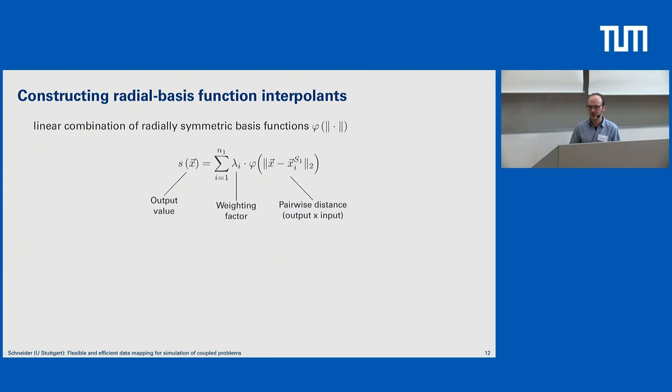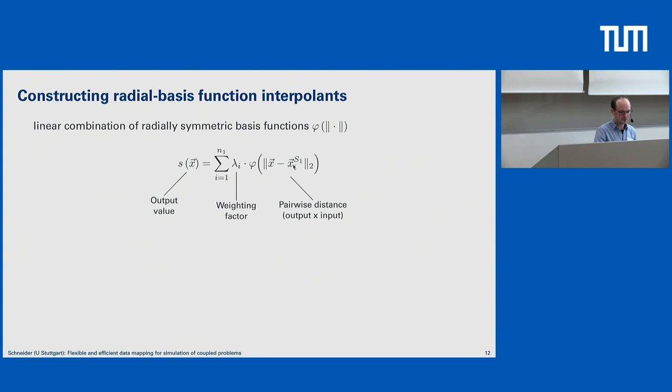How do radial basis function interpolation methods work? To compute solutions with RBF interpolation, we use this formula: S is our desired output value, and we have a sum over all basis functions. The basis function measures the pairwise distance between our output mesh vertex location x and all input mesh vertex locations. The only unknown is our lambda — a weighting factor. In order to determine the weighting factor, we use the interpolation condition.